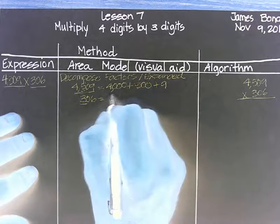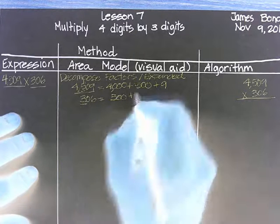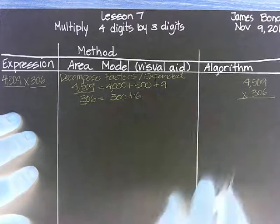The second one is 300. Plus, again, we're not writing the zero, but we're writing the 6, 1. Okay? Now we have the decomposition. We can focus on the area model.